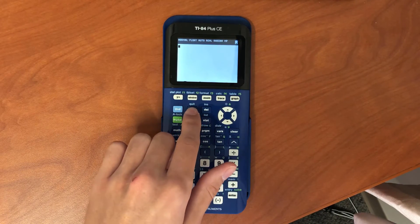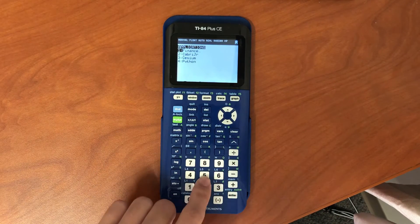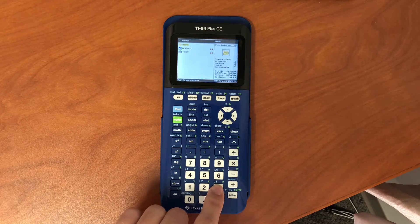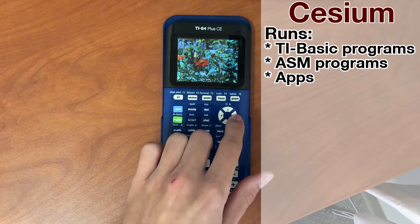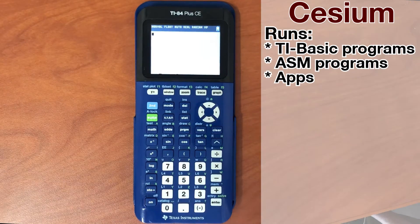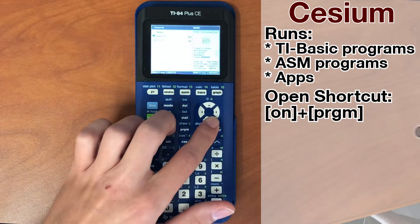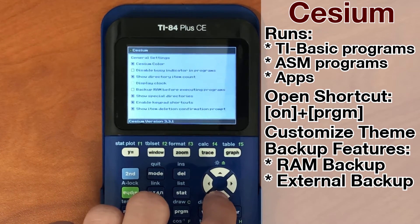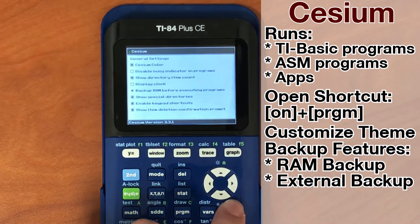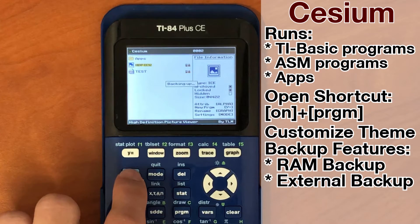For those who don't like the regular program menu interface and want something faster and sleeker and overall better, you can install a shell called Cesium which will allow you to run assembly and basic games listed all in one place. It's super fast to open, fully customizable, and even has features like a RAM backup so data doesn't get deleted if a program crashes. Best of all, it still works even if Artifice gets deleted.